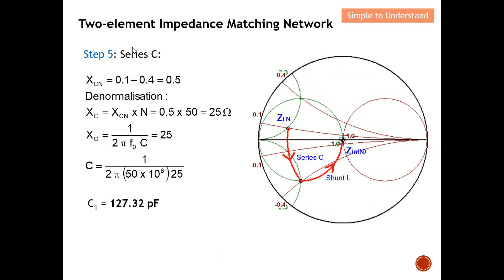Next I calculate the series C. Since it's in series, I observe the impedance — the red circle. I read a movement of 0.1 here and a movement of 0.4 there, so the total movement is 0.1 plus 0.4 equals 0.5. To denormalize I multiply by 50, giving X_C equals 25 ohm. Using X_C equals 1 over 2πfC, I calculate C equals 127.32 picofarads.